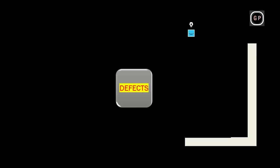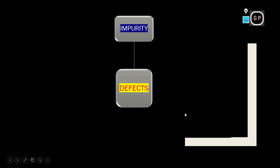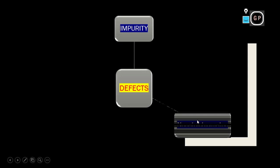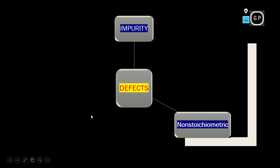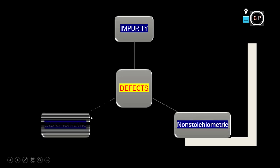So there are three types of defects. The first one is an impurity defect, the second one is a non-stoichiometric defect, and the third one is the stoichiometric defect. Let us understand what possible questions will be asked regarding this topic in examinations.